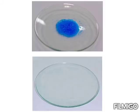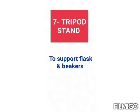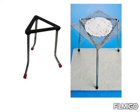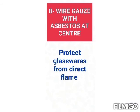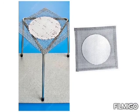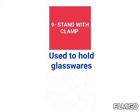Next is the watch glass, which is used for weighing chemicals or used as a lid to cover. Next is the tripod stand, which is used to support flasks and beakers while heating during chemical reactions. Next is the wire gauze with asbestos center, which protects the glassware from direct flame.